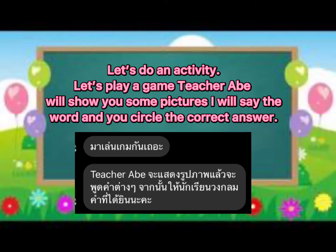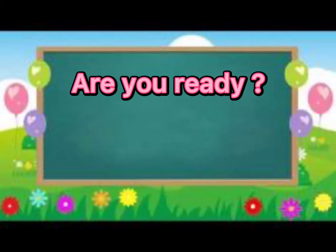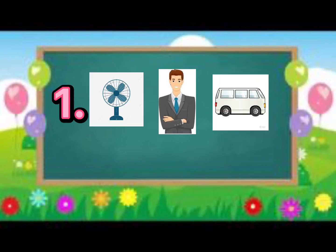Let's play again. Teacher Abbey will show you some pictures. I will say the word and you circle the correct answer. Are you ready? Okay, let's start. Number one: fan, man, van. Where is the man?